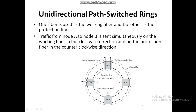If we want to send data from node A to node B, in the working connection it transmits in the clockwise direction, and in the protection connection it transmits in the anticlockwise direction. Protection is performed at the path layer for each connection. Node B continuously monitors both the working and protection fibers and selects the better signal between the two for each SONET connection.